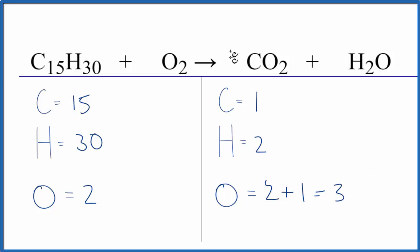Let's just balance the carbons. We'll put 15 here. 1 times 15, so those are balanced. Next, let's do the hydrogens. We need to put a 15 here, because 2 times 15, that equals 30.